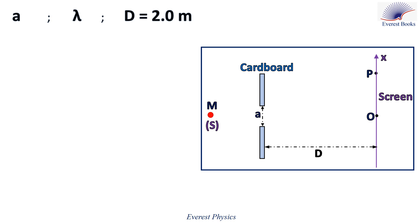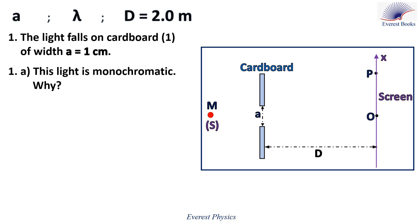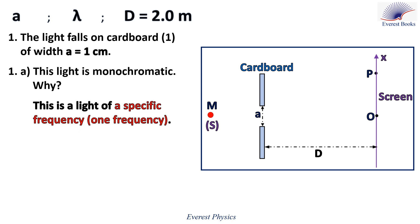The shown document is a top view of the experimental setup. Part one: light falls on cardboard one of slit width A equals one centimeter. Part 1A: this light is monochromatic, since it has one specific frequency.